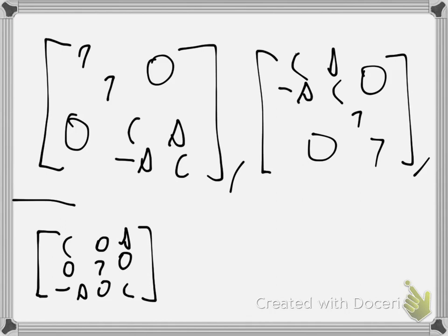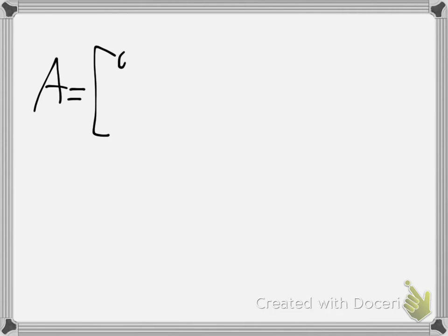There should always be some relation between the position of the cosines and the sines. The procedure is as follows. Let's say we have some matrix A with all its elements.